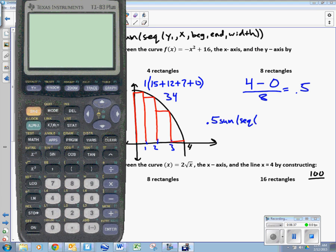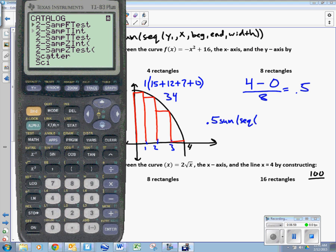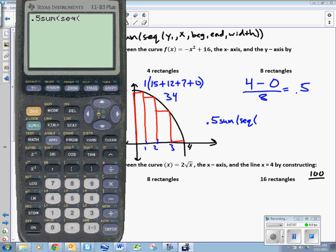So, let's type this in. I will go 0.5 times sum, and if you go second, catalog, and hit S for sum by T, I just have to go up one, and I'm right at sum. You've got to scroll down to get it. Then you go sequence, so second, catalog, and you want to grab the smaller case one. Sequence, one is a parenthesis. Now, hold on. You've got two options. You can either just type in the function, or you can type the function, the y equals, and then enter the y1 variable. It doesn't matter. What would you rather do? Okay, let's just type it in. So, you go negative x squared plus 16.